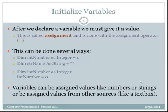After we declare the variable, we need to give it a value. In order to give it a value, we're going to use what's called the assignment operator. The assignment operator is this equal sign. So we can do that in a couple of ways. We can declare the variable first and then initialize it on the same line, or we can do it on two separate lines. So just dim int number as integer equals zero, dim str name as string equals quote, quote.